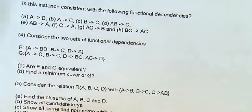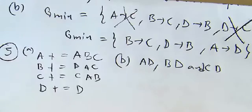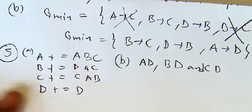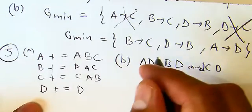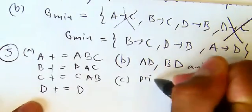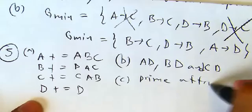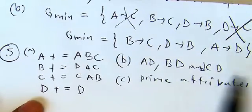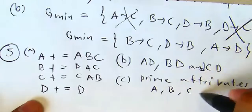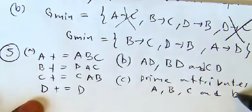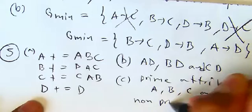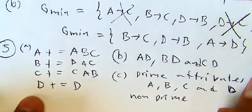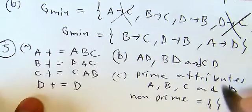Using that information, we identify prime and non-prime attributes. Since every attribute appears in at least one candidate key, the prime attributes are A, B, C, and D — all attributes are prime. There are no non-prime attributes.